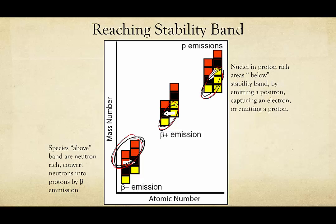For atoms that are below the stability band, there are several ways they can undergo decay to reach a stable nuclei. In one case, emitting a positron will effectively change a proton into a neutron, decreasing the ratio of protons to neutrons. Also, emission of a proton will likewise lower the ratio of protons to neutrons.